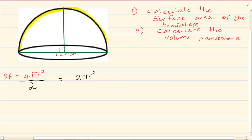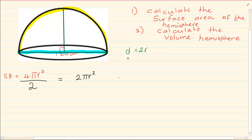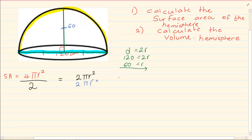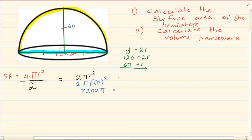Now, what is r? If you look, they give us the diameter. The diameter is 120. From your previous knowledge, d = 2r, which means if your diameter is 120 then r = 60. Remember when doing the hemisphere you need the radius, and the radius is consistent everywhere — it will also be 60. So for the surface area of the top part of the hemisphere we have 2π(60)², which gives us 7200π centimeters squared.